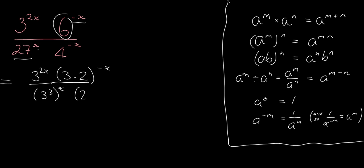And again, what's 4? 4 is 2 squared and that's to the power of minus x. Now I can use some rules to help me sort this out. So 3 to the 2x, nothing happens to that.